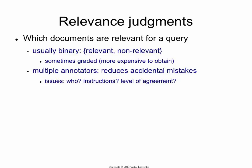So what are the relevance judgments? This is basically what decides which documents are relevant and which are not. Relevance judgments are usually binary, so either relevant or non-relevant. Sometimes you have graded judgments, where documents are ranked on a scale, say from 1 to 5, something like that.